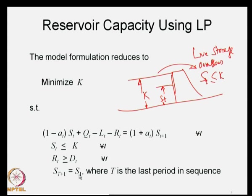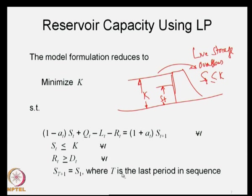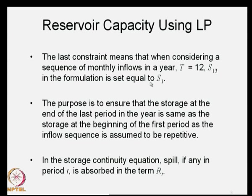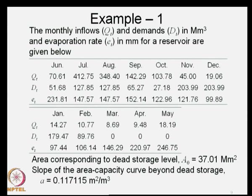We add the constraint S_{T+1} = S_1, where T is the last period in the sequence. For monthly sequences of 36 time periods, S_37 = S_1 — the storage at the end of the last time period equals the storage at the beginning of the first period. Any spill is absorbed in the release term R_T.